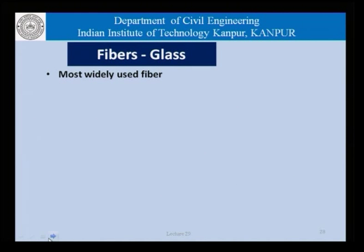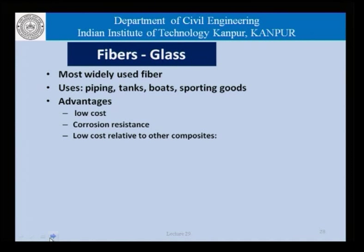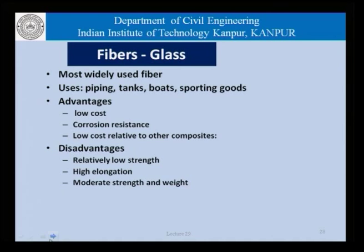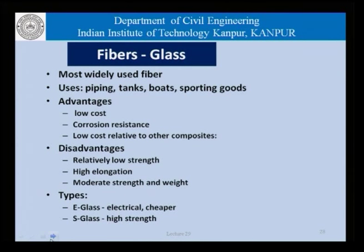Glass fibers are the most widely used fibers, used in piping, tanks, boats and sporting goods, with advantages of low cost and corrosion resistance. However, they have the disadvantage of relatively low strength, high elongation, and only moderate strength-to-weight ratio.